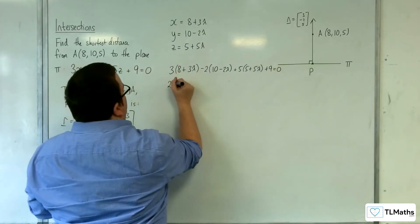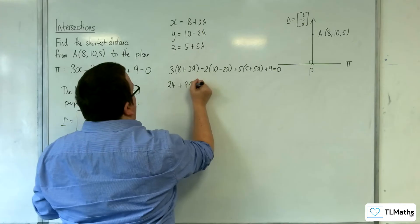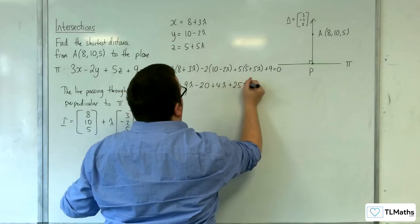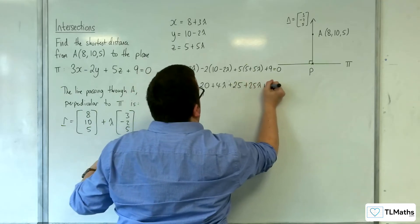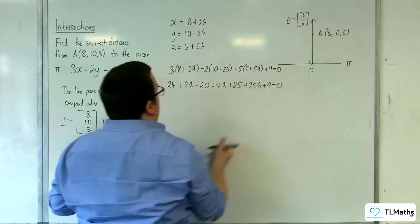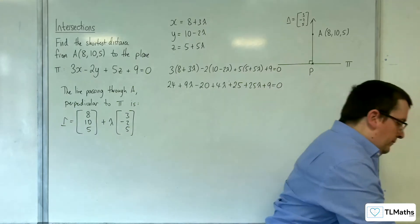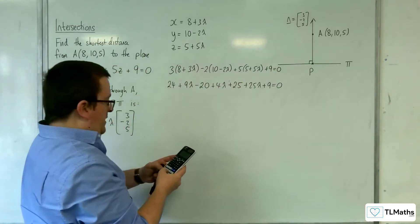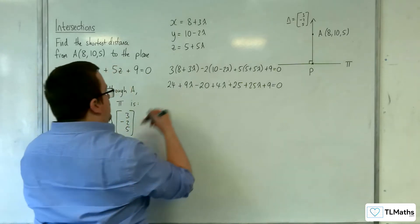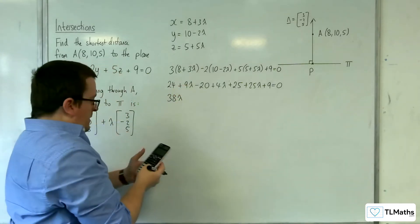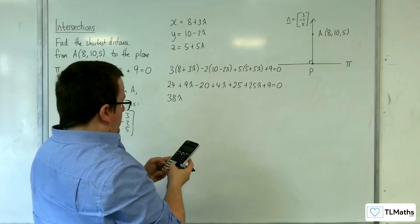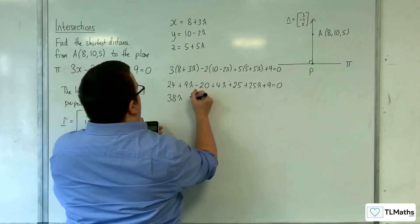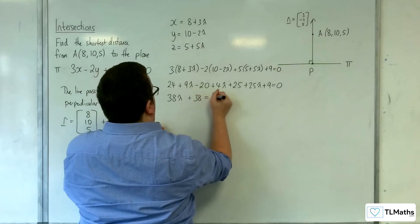So 24 + 9λ - 20 + 4λ + 25 + 25λ + 9 = 0, so 38λ. And we've got 24 - 20 + 25 + 9 gets me plus 38, equals 0.